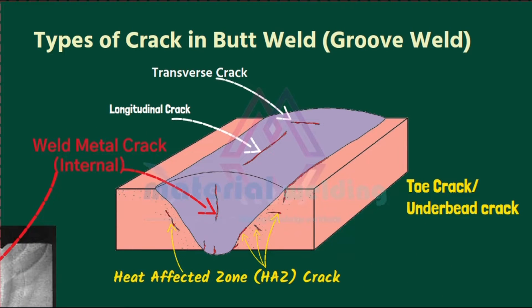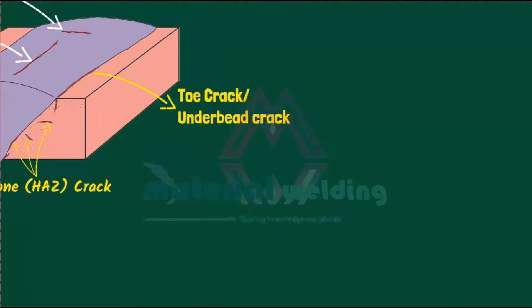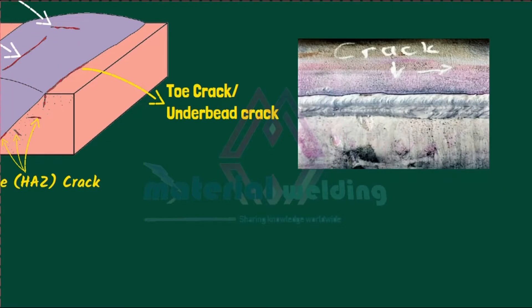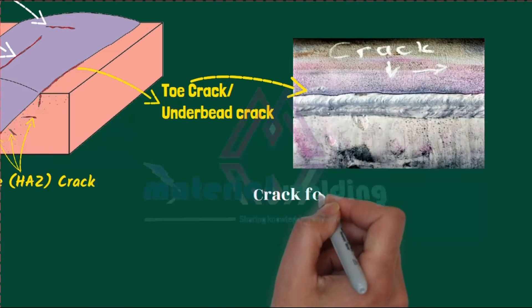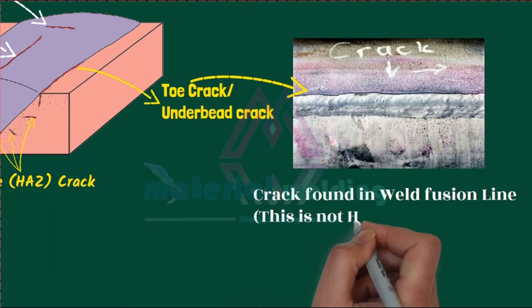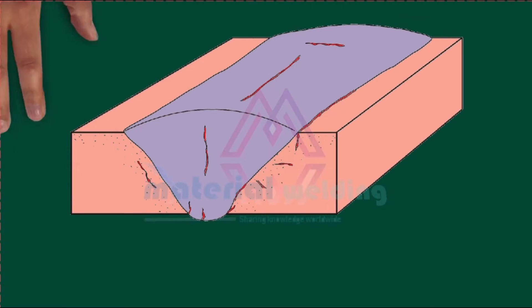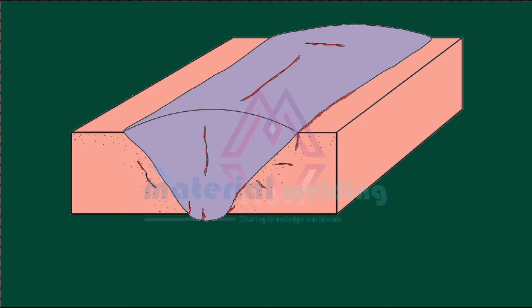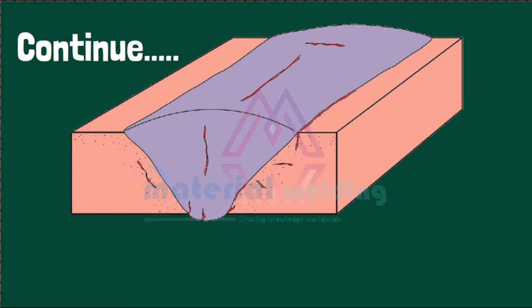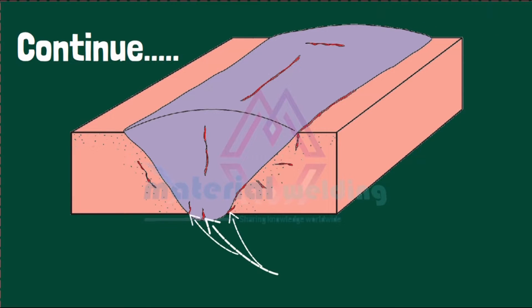A toe crack appears at the fusion line and is also called an underbead crack.